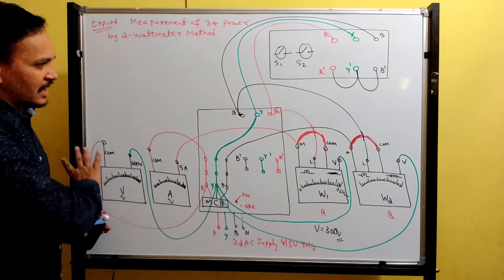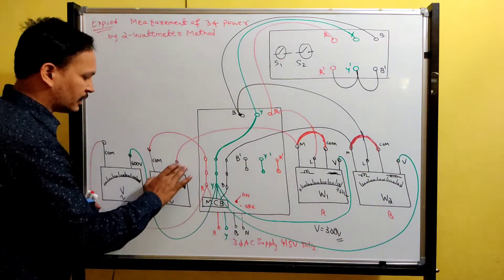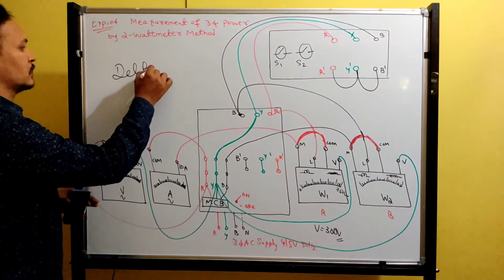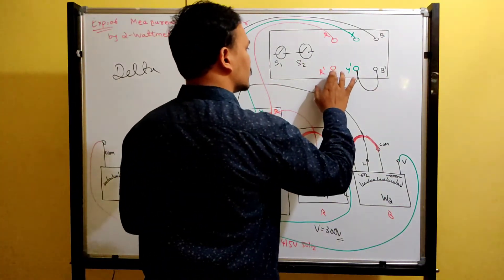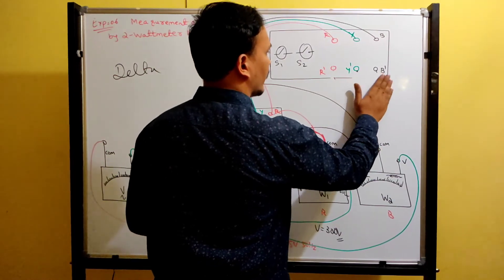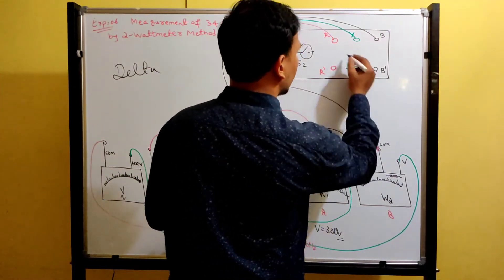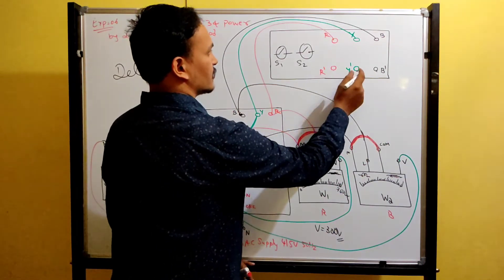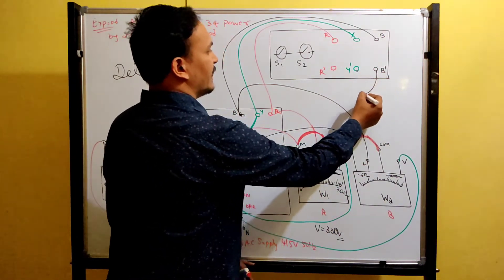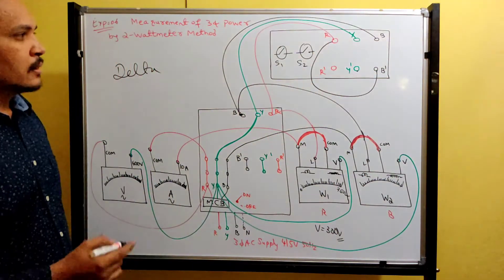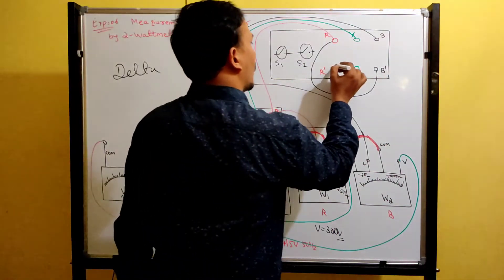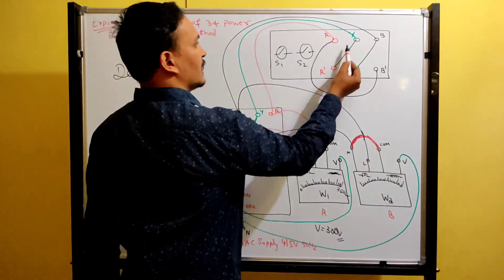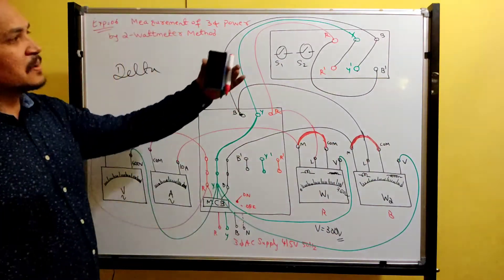Next, how to do delta connection: as it is, keep the ammeter at 10 ampere range. Remove the shorted wires from the star connection. Now make delta connections on the lamp load bank itself: B' is connected to R, R' is connected to Y, Y' is connected to B. That is the delta connection.